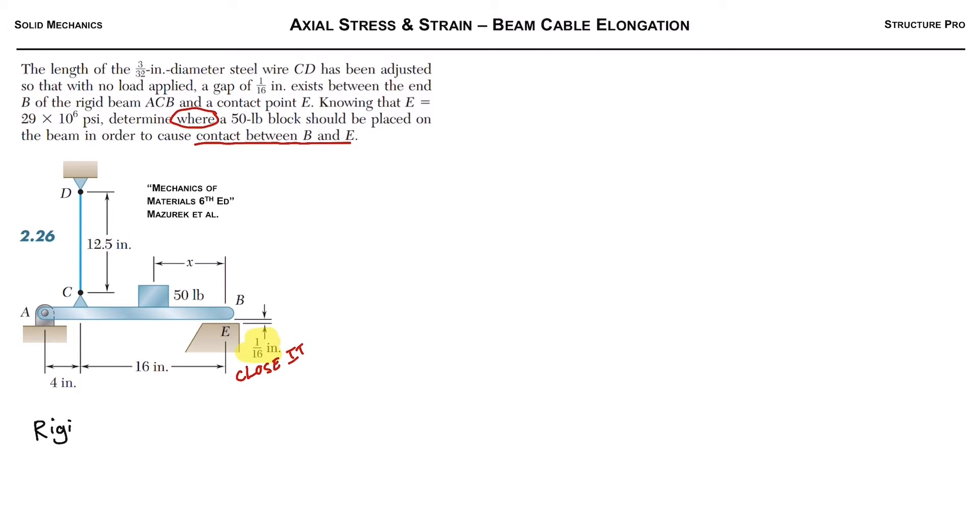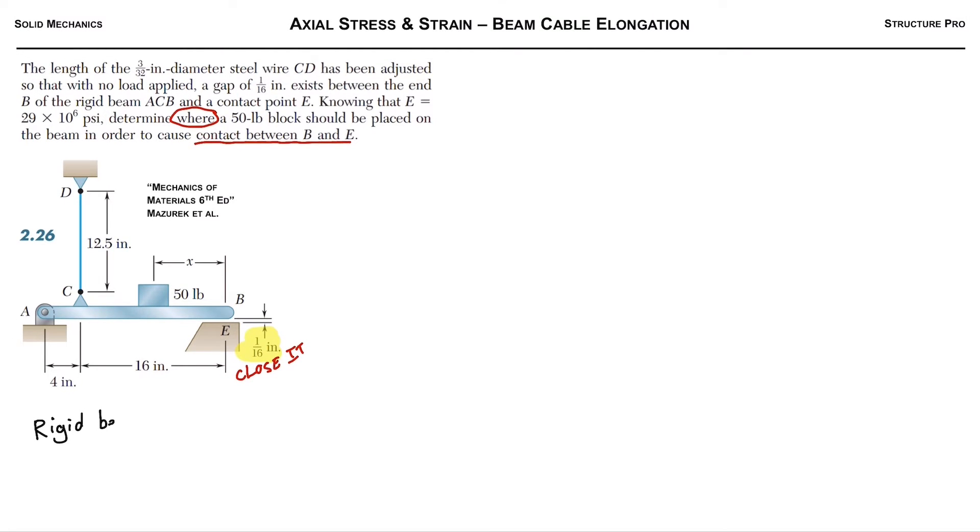We got this rigid beam ACB, and we're gonna use trigonometry to our advantage here. This beam is gonna have to rotate through a certain angle theta in order to close B and E. If it's a small angle, then small angle theorem holds true and the sine of the small angle is equal to the small angle.